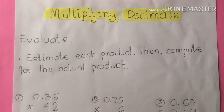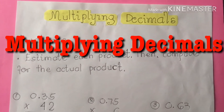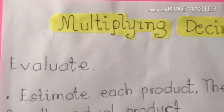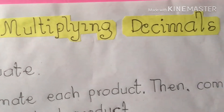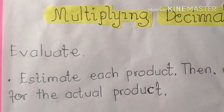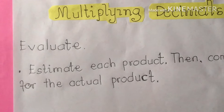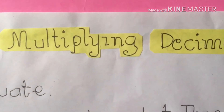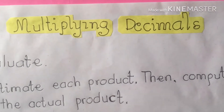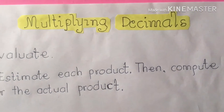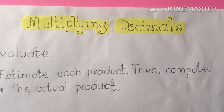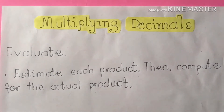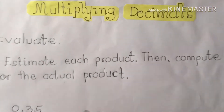Today class, we are going to discuss about multiplying decimals. Remember class, to multiply decimals, just like multiplying whole numbers — line up the numbers on the right. Do not align the decimal points. Starting on the right, multiply each digit in the top number by each digit in the bottom number, just as with whole numbers. Then add the products.